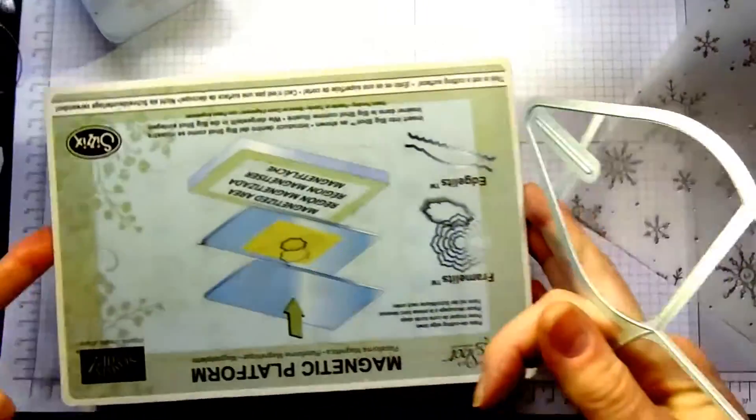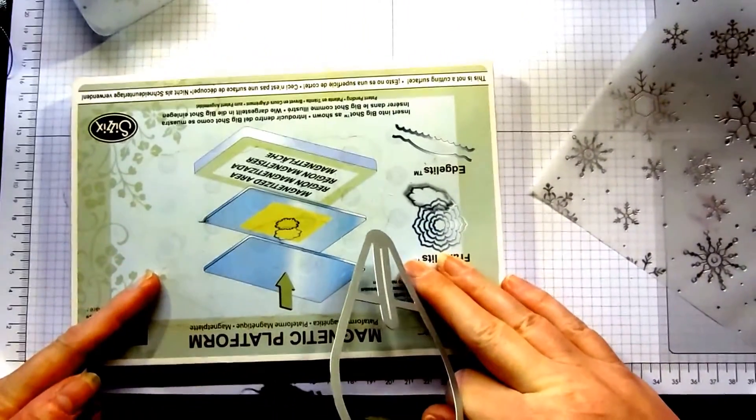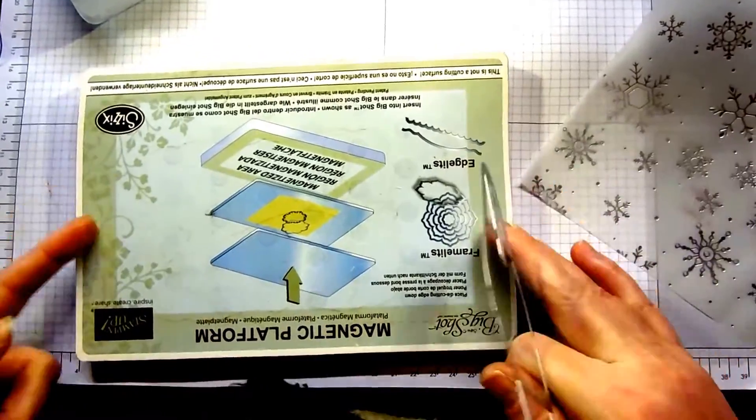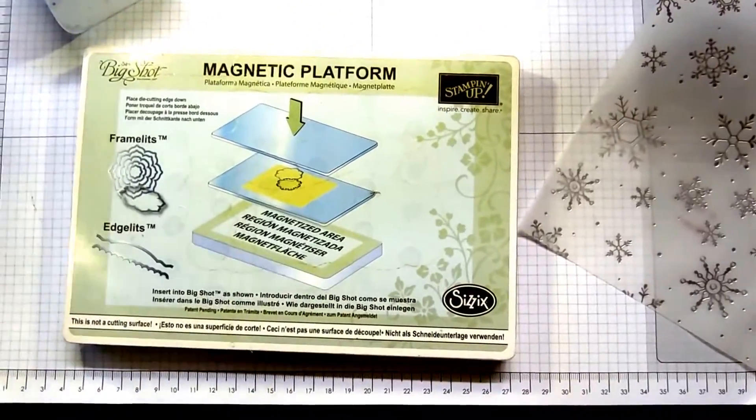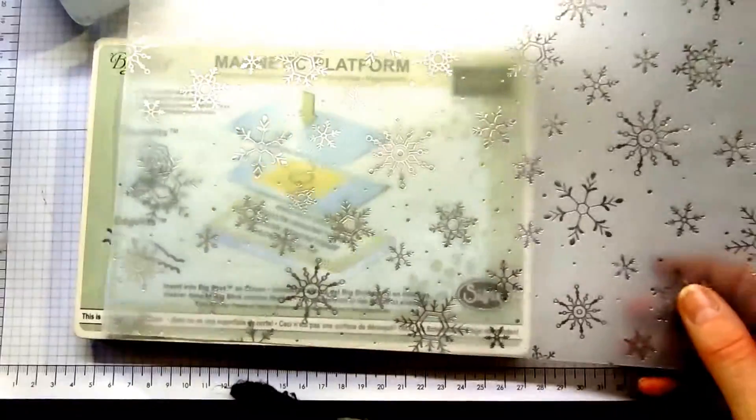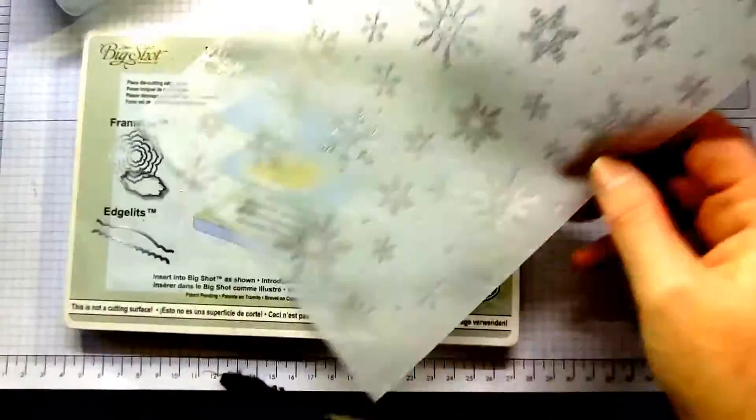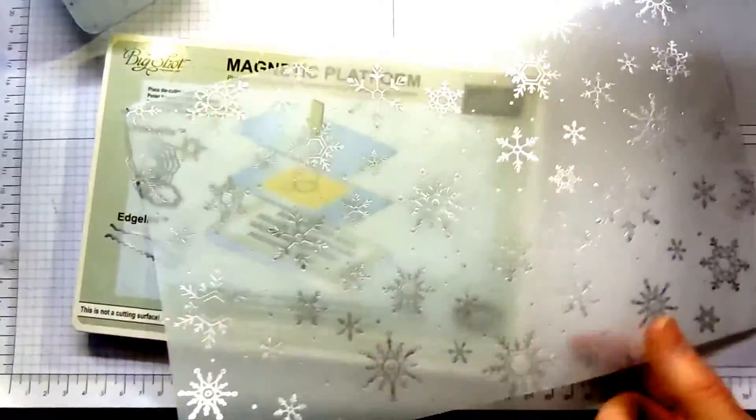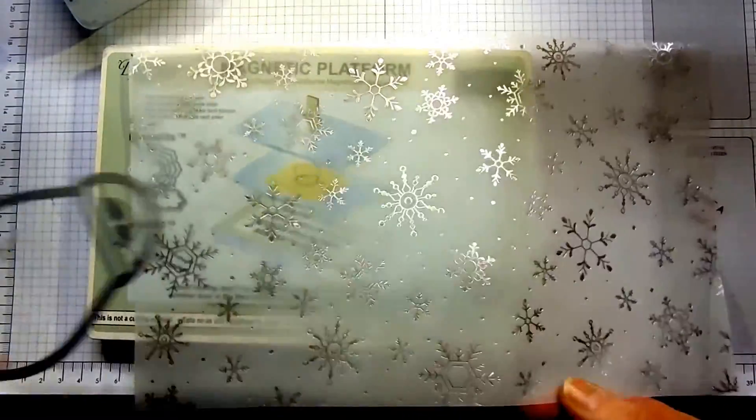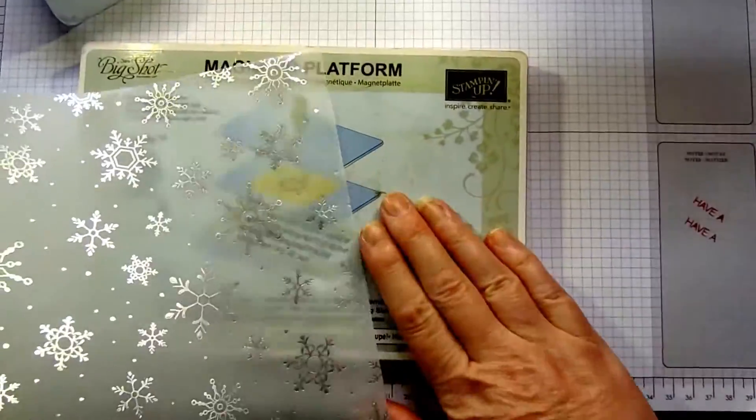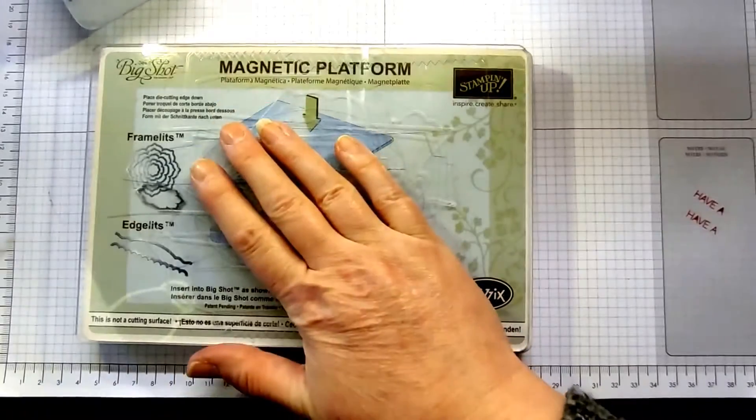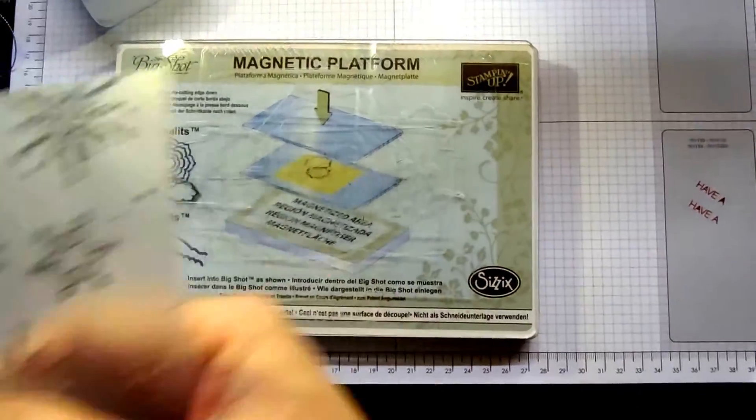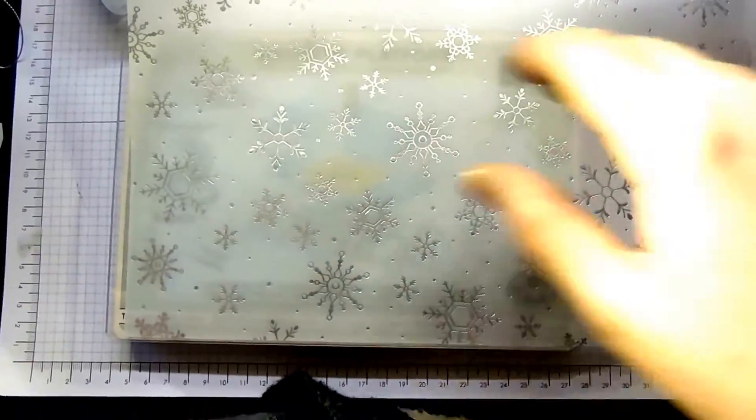The sandwich that you want: your magnetic platform or the multi-purpose platform - turn it around the right way, otherwise you've got the wording upside down. Then you put in your piece of fancy foil vellum trimmed to size. You've got the magnetic platform, then you have an acrylic plate, ideally a pretty flat one, not one that's really well used.